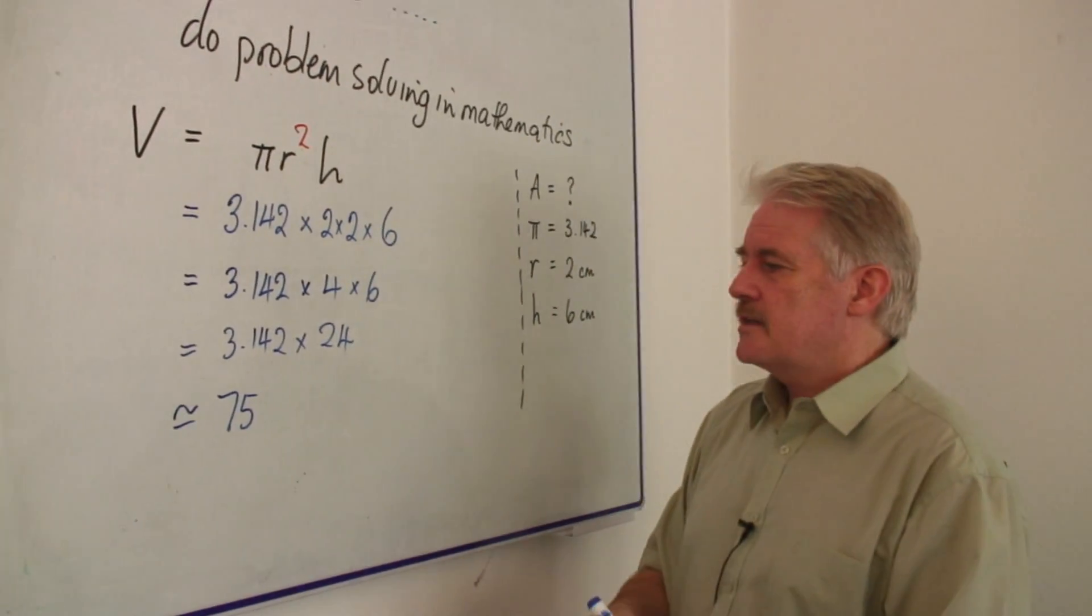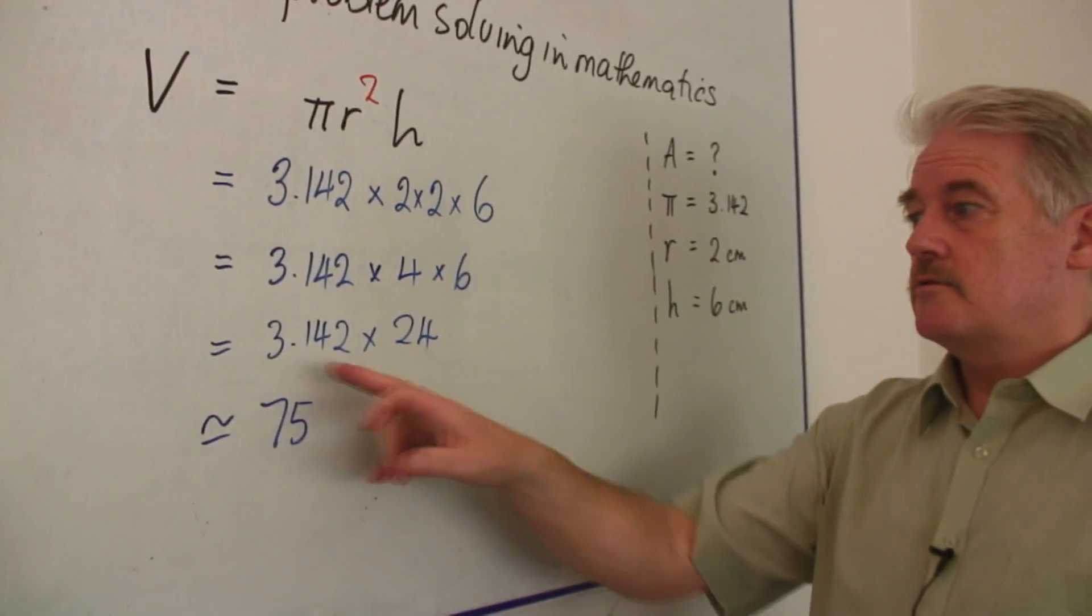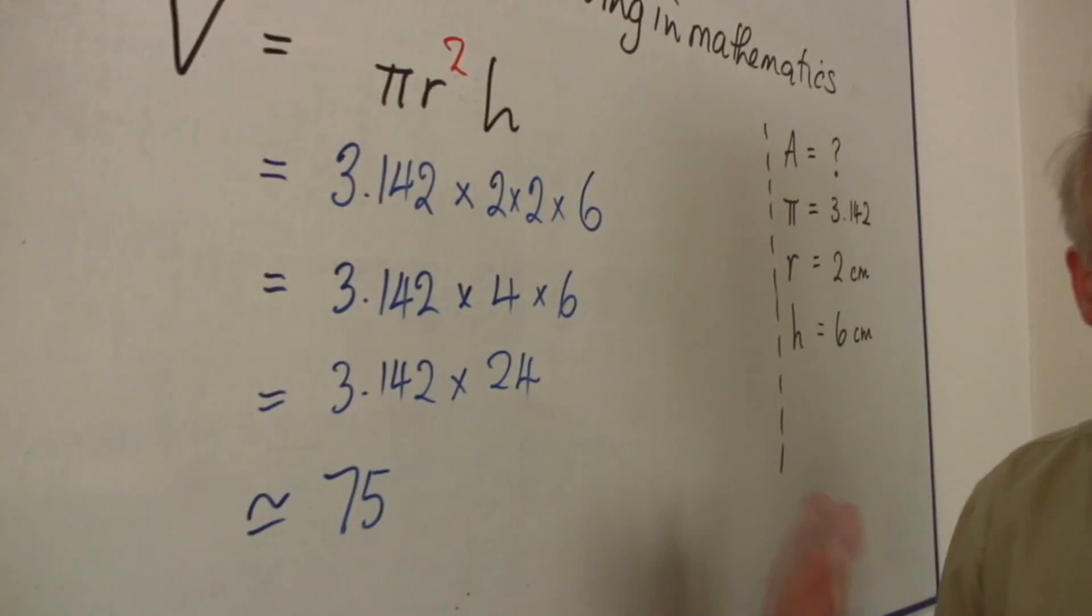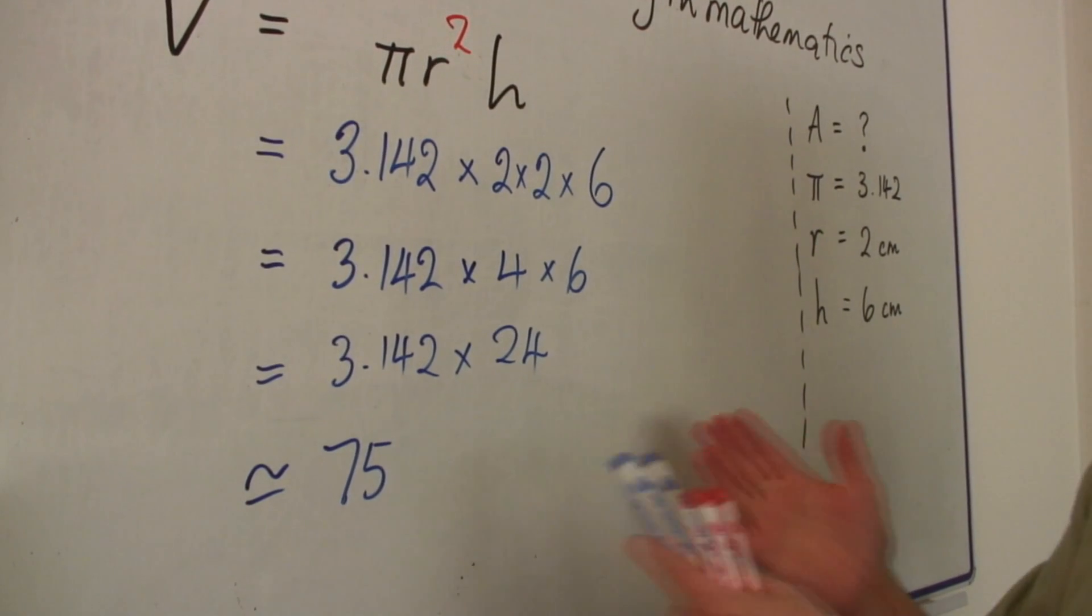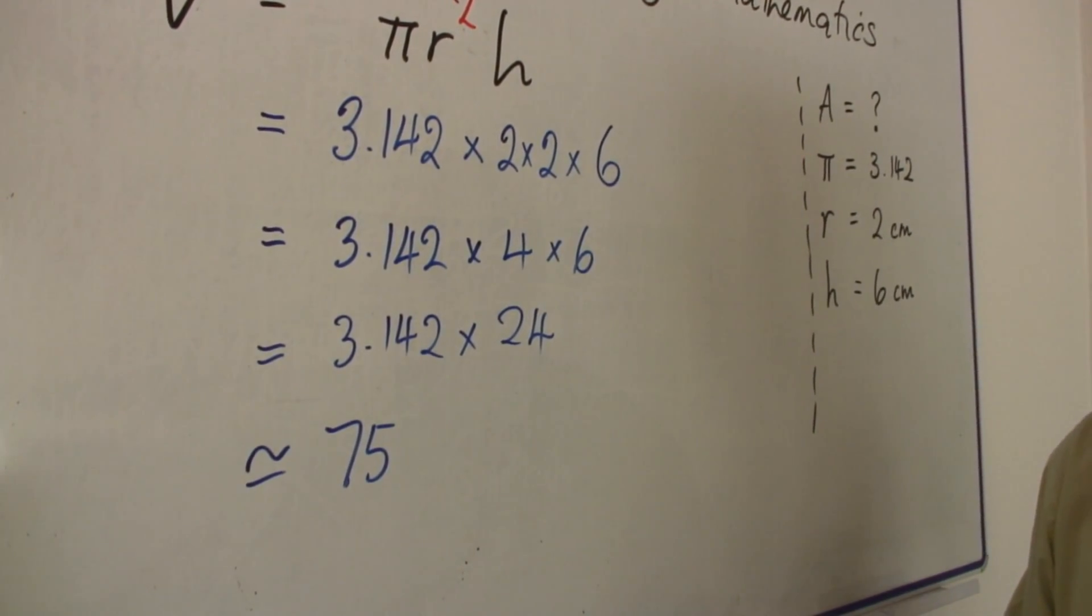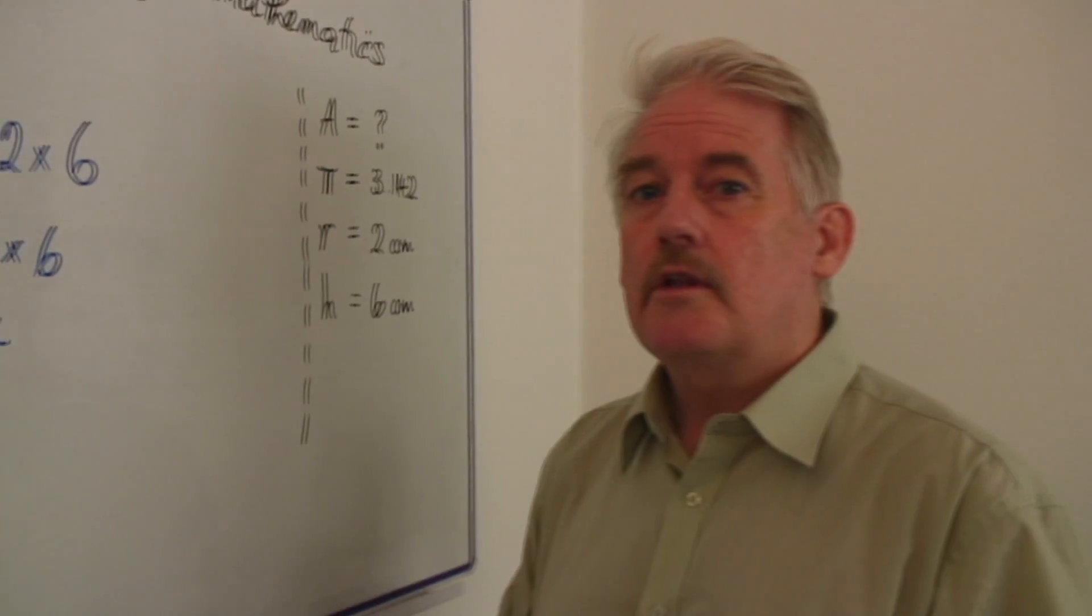At this point, if I use a calculator to get the answer, I will check that my guess at 75 is somewhere near the answer I get with a calculator. It's very easy to put something wrong in the calculator.